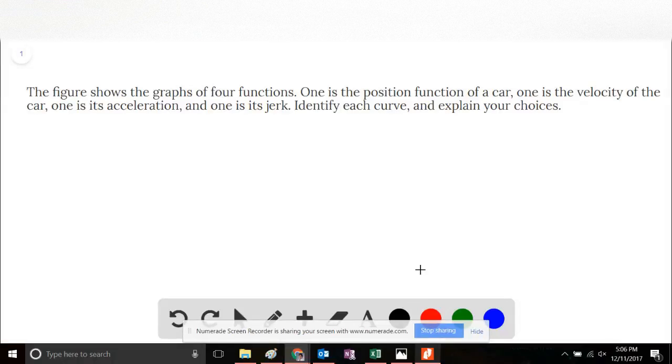This is problem number 52 of the Stewart Calculus 8th edition, section 2.8. The figure shows the graphs of four functions. One is the position function of a car, one is the velocity of the car, one is its acceleration, and one is its jerk. Identify each curve and explain your choices.